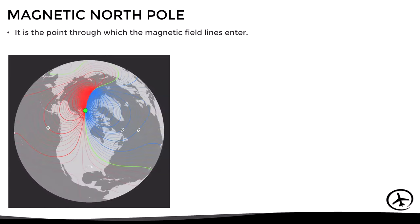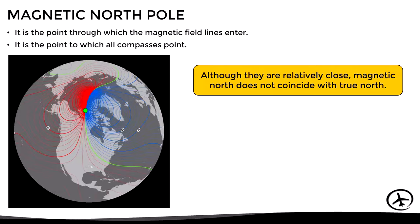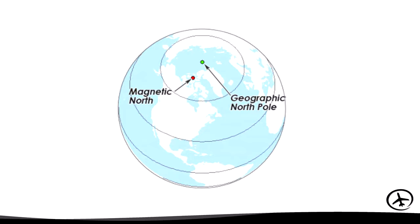The earth's magnetic north is the point through which the magnetic field lines enter the planet, and therefore it is the point to which all compasses point. Although they are relatively close, magnetic north does not coincide with true north — the geographic north pole and the magnetic north pole are located in different places. The green point represents the earth's geographic north, aligned with the earth's axis of rotation and where all meridians converge, while the red point represents the earth's magnetic north.